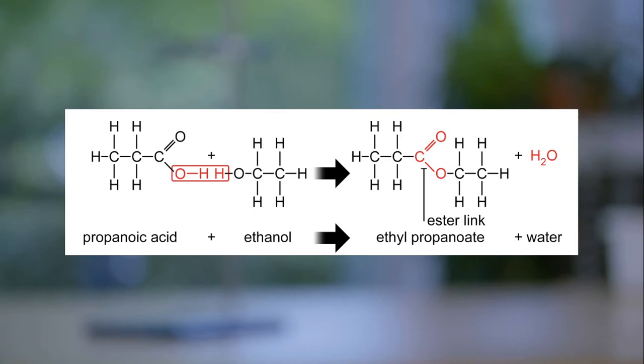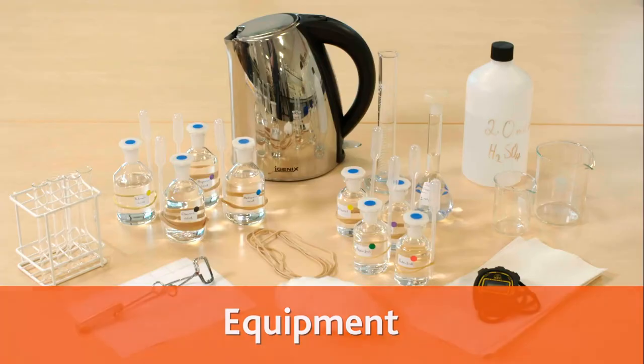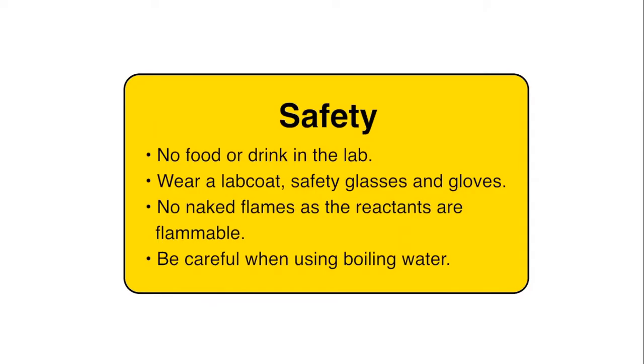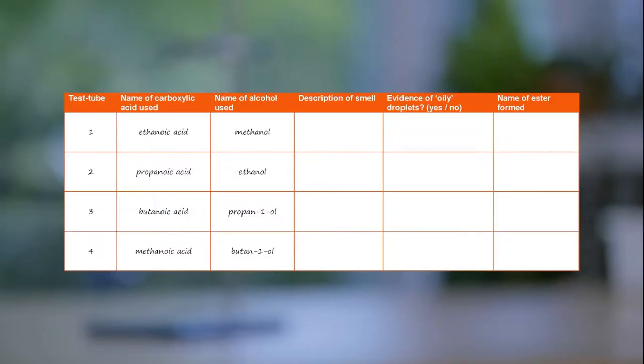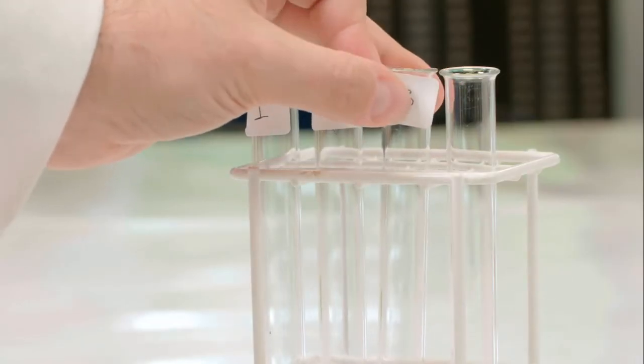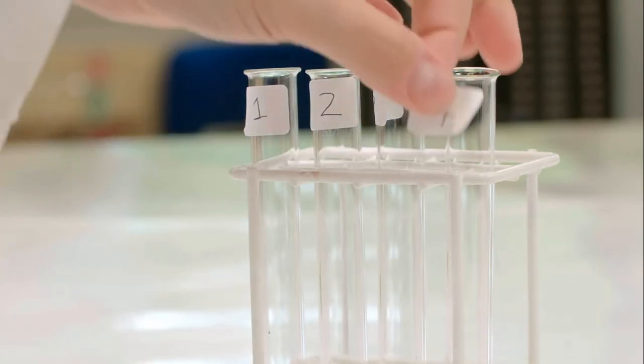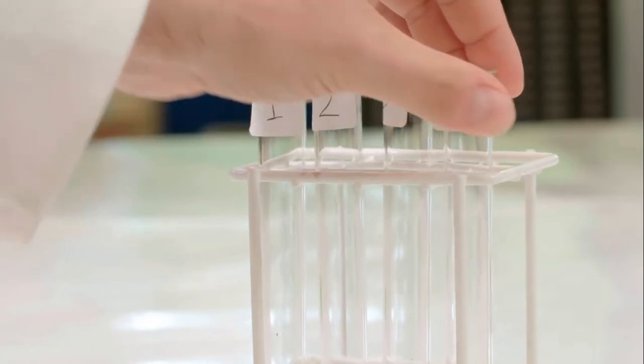In this experiment four different ester compounds will be prepared. A table like this will need to be constructed for recording the results. Four test tubes are labelled 1 to 4 and placed in a test tube rack. The labels need to be at or near the neck of the test tube.